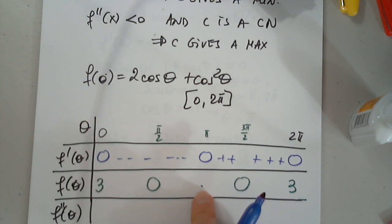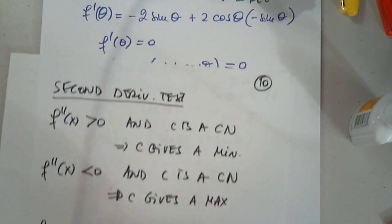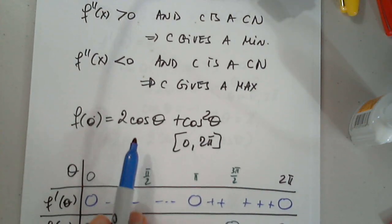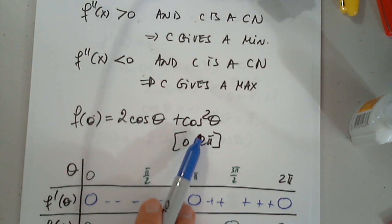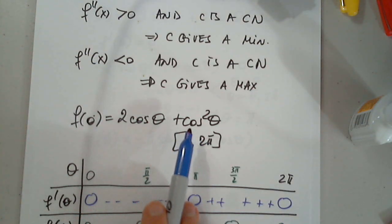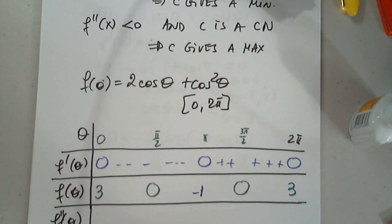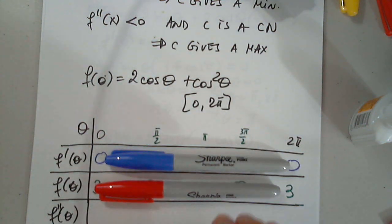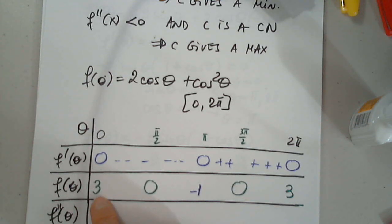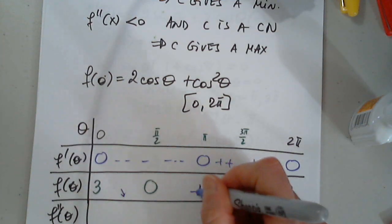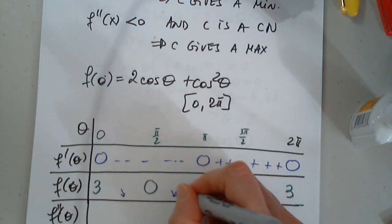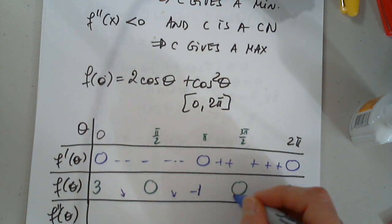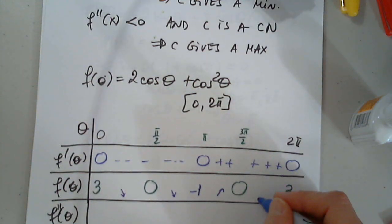I need to determine the function value at pi. This is negative one for cosine and one for cosine squared, so negative two plus one is negative one. From 3 to 0, yes, it goes down — supported by the sign. From 0 to negative one, it goes down and that's supported. From negative one to 0 it's increasing, and from 0 to 3 it's increasing. Correct.